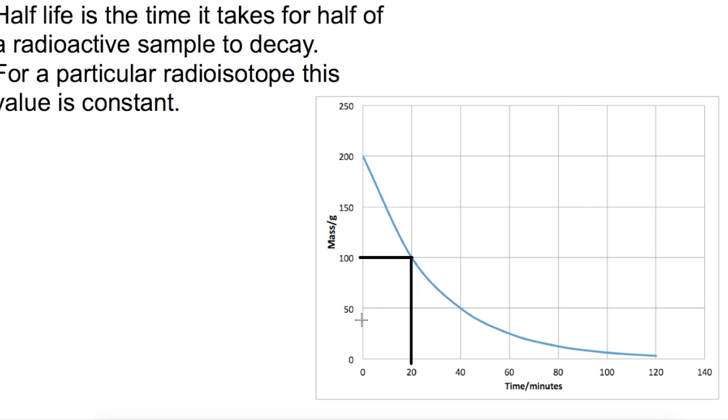You can do this for any of the values. So if we take another value, if we go from 100 down to 50, the time at 100 is 20 minutes and the time at 50 is 40 minutes. So the time difference there is again 20 minutes. This time is constant as we go down, so that gives us this curve.